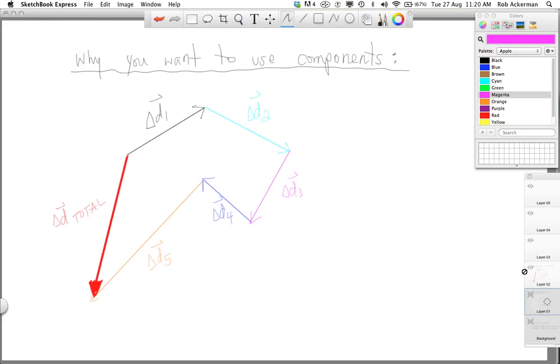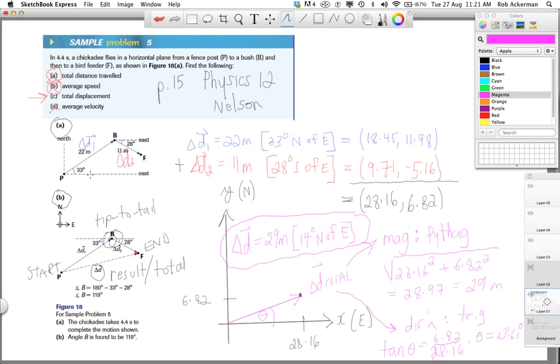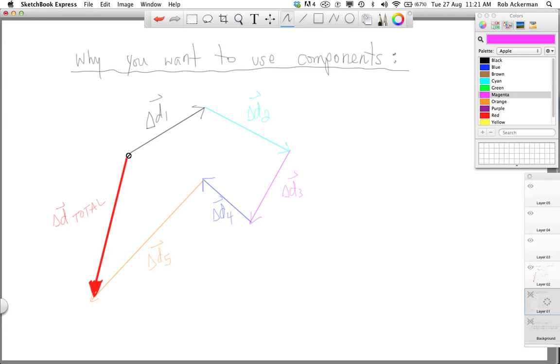So, let's X this out and go to another page that I've prepared for you. Title here, why you want to use components. Suppose you did the following. Suppose you or the bird moved from point A to point B, B to C, but now there's more. C to D, D to E, E to F. Suppose this is what happened, five separate displacements, delta D1, 2, 3, 4, and 5, as opposed to what we just saw in this problem, where there was just two displacements. Notice that two displacements in two dimensions give you a triangle. Triangles are pretty easy to solve, but what happens when you end up with five displacements? Here's your delta D total going from the start, which is over here, to the end, which is over here.